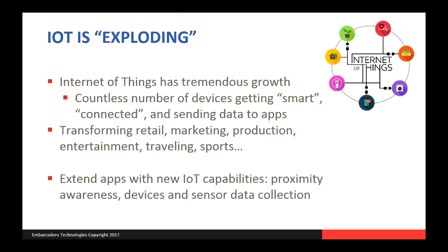With IoT you can extend existing applications with brand new capabilities, such as adding proximity awareness with beacons. Your mobile app can know exactly where it is with the accuracy of centimeters, instead of just knowing its location with GPS, which does not work indoors. You can also work programmatically with all kinds of devices that are not necessarily computers, using Bluetooth LE and other new generation communication protocols to communicate and collect data from all kinds of sensors and devices.